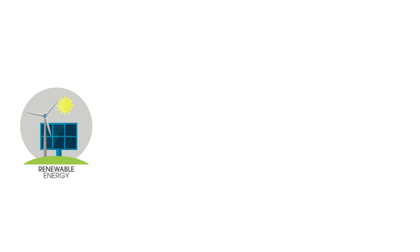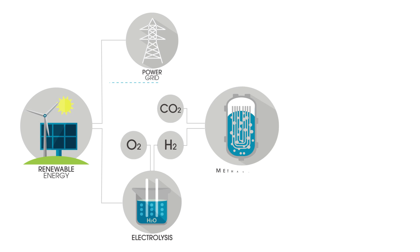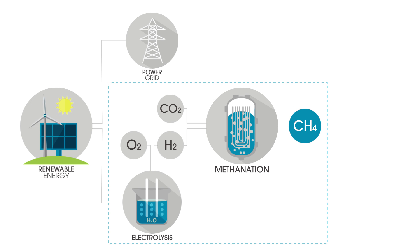In power to gas, excess renewable energy from wind and solar is converted to methane, the principal component of natural gas.